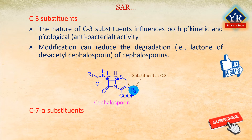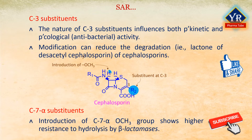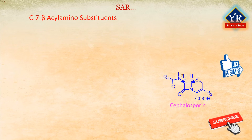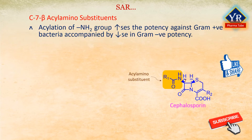Carbon-7-alpha substituents: Introduction of a carbon-7-alpha methoxy group shows higher resistance to hydrolysis by beta-lactamase enzymes. C7-beta acylamino substituents: Acylation of the amino group generally increases the potency against gram-positive bacteria but it is accompanied by a decrease in gram-negative potency.